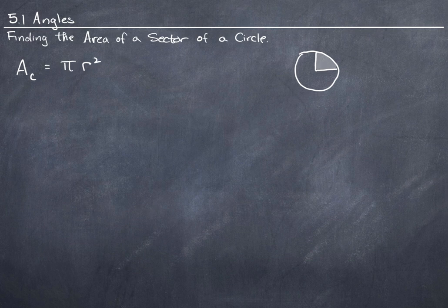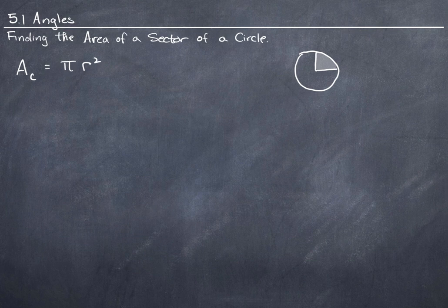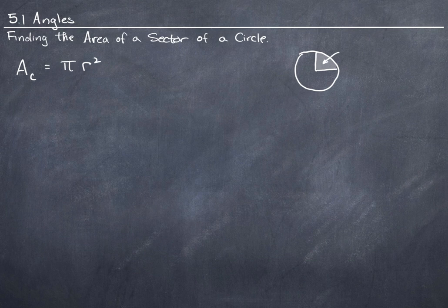That looks like it's about 90 degrees or pi over 2 radians, but it's not quite, so we're going to have to be careful here. I want to find out what the area of this sector is, not the whole circle.